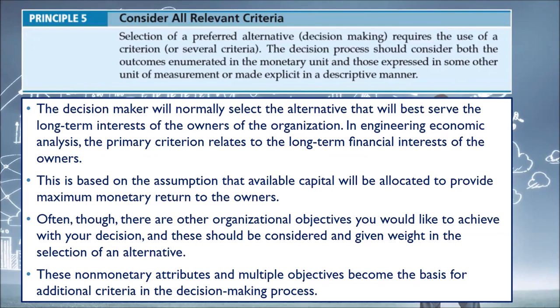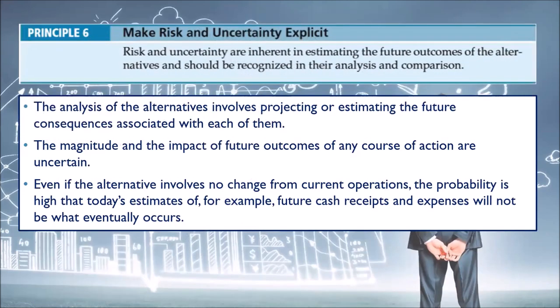Principle 6: make risk and uncertainty explicit. Risk and uncertainty are inherent in estimating the future outcomes of alternatives and should be recognized in their analysis and comparison. The analysis involves projecting or estimating the future consequences associated with each alternative. The magnitude and impact of future outcomes of any course of action are uncertain. Even if the alternative involves no change from current operations, today's estimates — for example, future cash receipts and expenses — will likely not match what actually occurs.